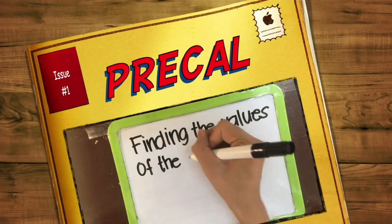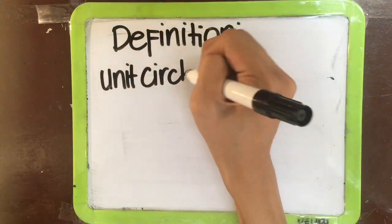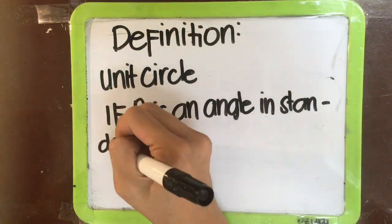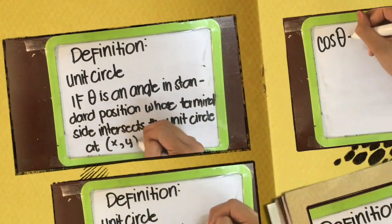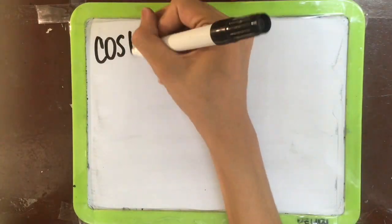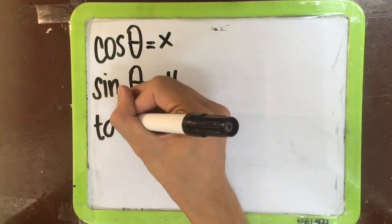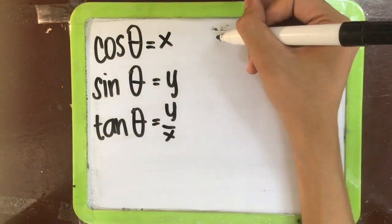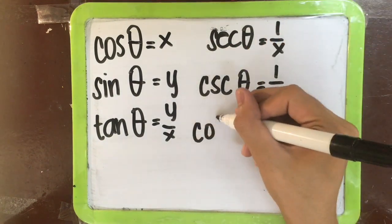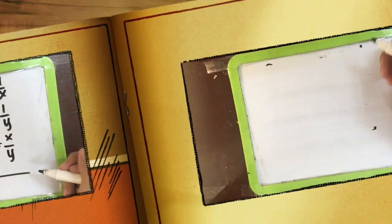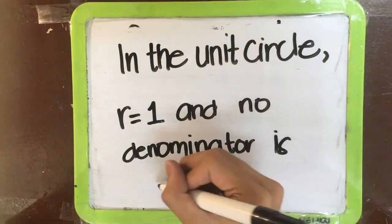Finding the values of the six circular functions. Definition of the unit circle: if theta is an angle in standard position whose terminal side intersects the unit circle at (x, y), then cosine theta equals x, sine theta equals y, tangent theta equals y over x, secant theta equals 1 over x, cosecant theta equals 1 over y, and cotangent theta equals x over y. In the unit circle, r is equal to 1 and no denominator is 0.